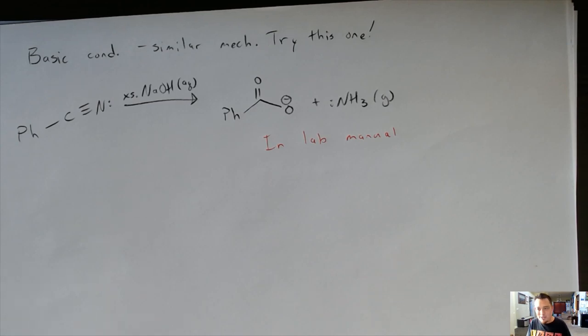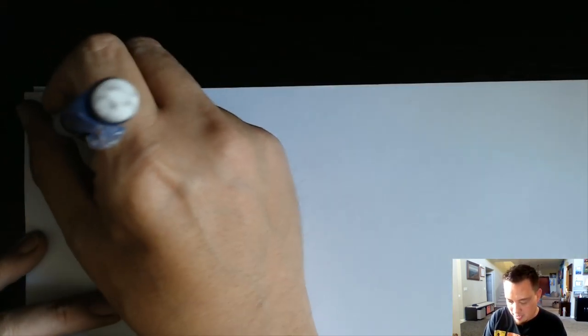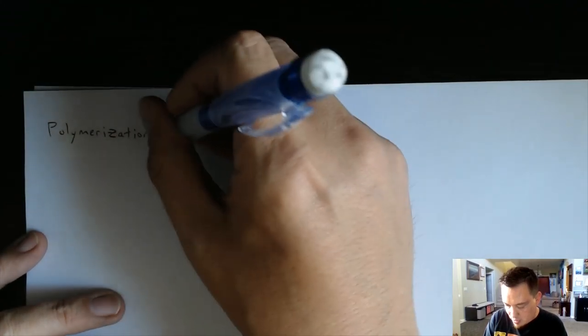I have one more reaction type to go and then we're done with this chapter! One more reaction. This next one's actually kind of cool. The last reaction I want to go over — then we'll do a few practice problems and then I'll cut the stream. We are doing polymerization reactions.